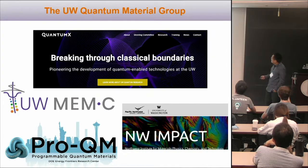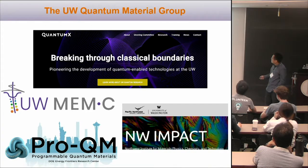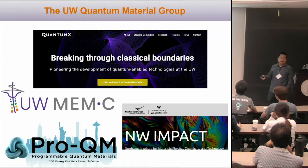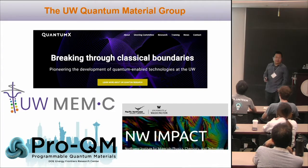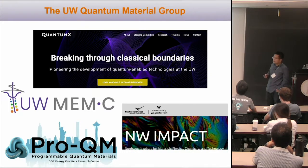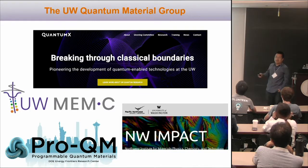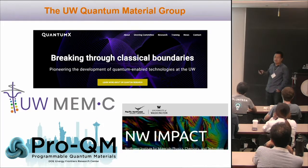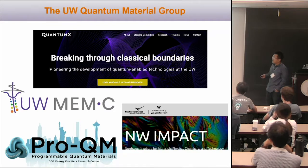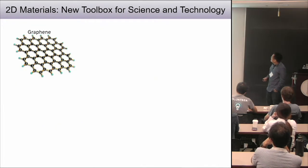In addition, we have several quantum material centers. For example, MEMC is the NSF-supported MRSEC center. ProQM is an EFRC center supported by DOE — a joint effort between Columbia, University of Washington, and Carnegie Mellon. The last one is called Northwest Impact, a joint effort between University of Washington and Pacific Northwest National Lab. We have a lot of things going on — it's a great place right now.